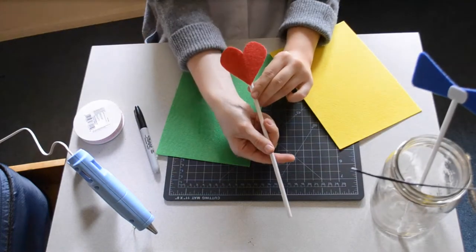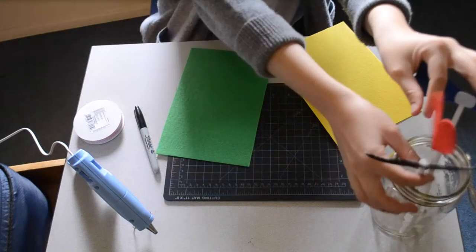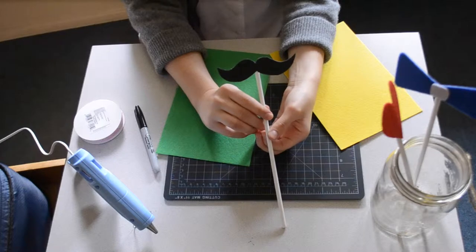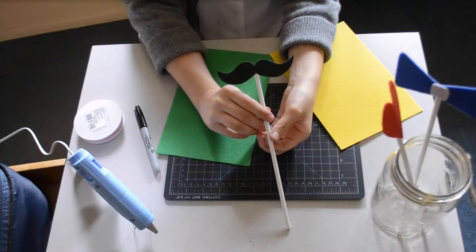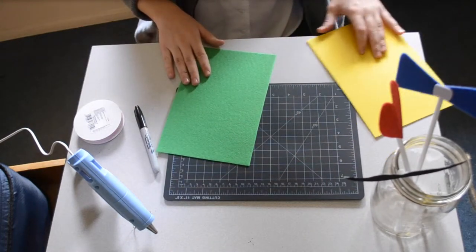You can do a heart, which is just cutting out a simple heart shape and hot gluing it onto the dowel, or you could do a mustache. I just free-handed these shapes and cut them out and glued them on, so they were super easy. The bow tie is a little more complicated, so that's why I'm going to show you guys how to do this one.